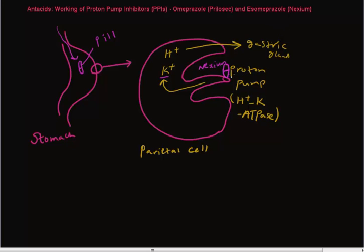So that's why, since they block or suppress the working of the proton pump, they're called proton pump inhibitors. And as I mentioned at the beginning of the video, these are the most widely used antacids these days for heartburn and acid reflux disease as well as ulcers.